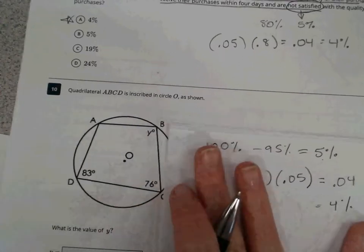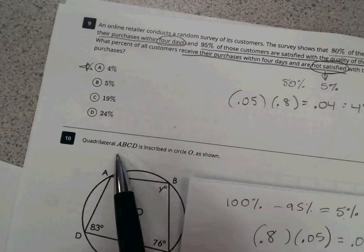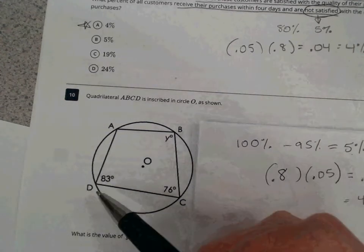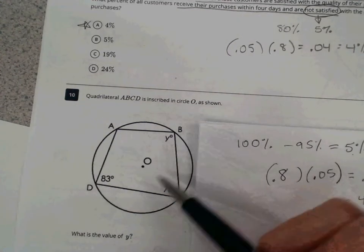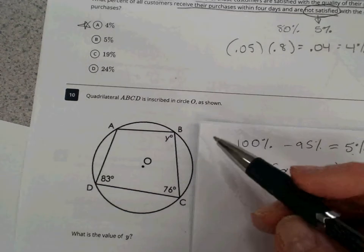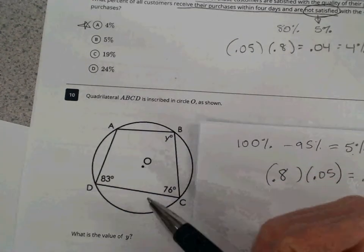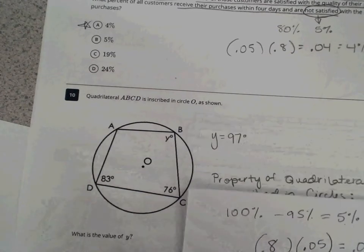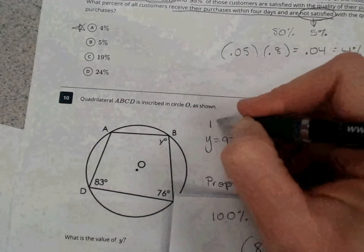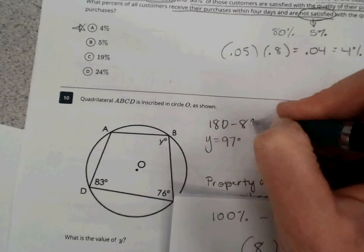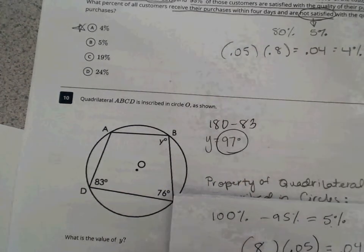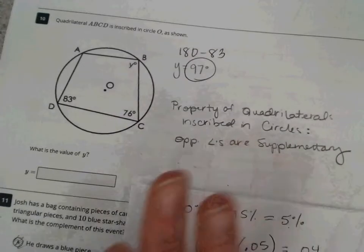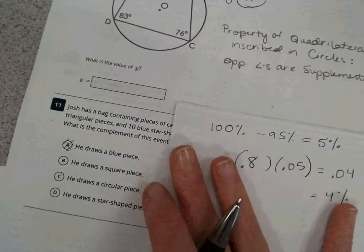Next up, question number 10. We have a quadrilateral that is inscribed in a circle, which comes with some properties. One of those properties says that opposite angles in that inscribed quadrilateral are supplementary. They add up to 180. So, in this question, we literally just have to take and subtract 83 from 180. So, 180 minus 83 is going to be equal to 97. Again, that's just a property of quadrilaterals inscribed in circles.